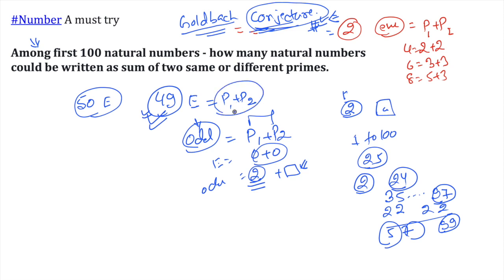49 even numbers could be written as sum of 2 primes according to Goldbach Conjecture. This is an unproven fact but it works. We have 49 even numbers and we have 24 odd numbers which are prime plus 2.